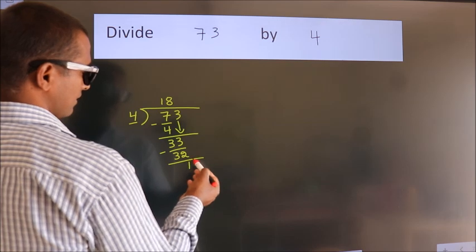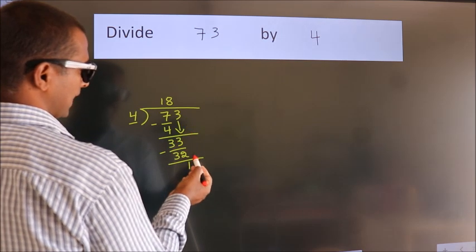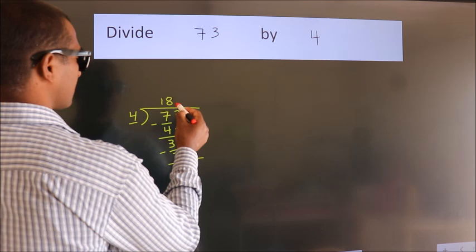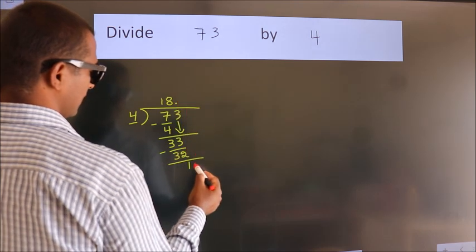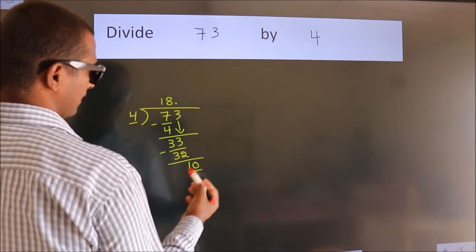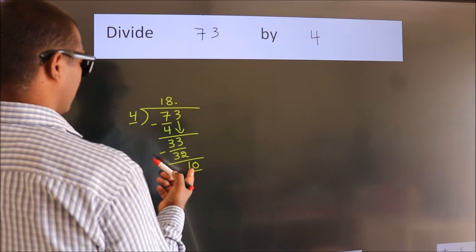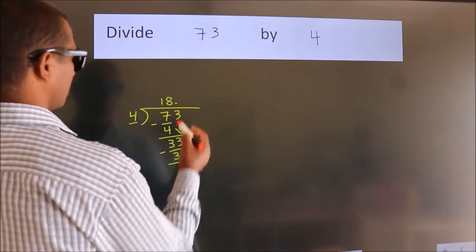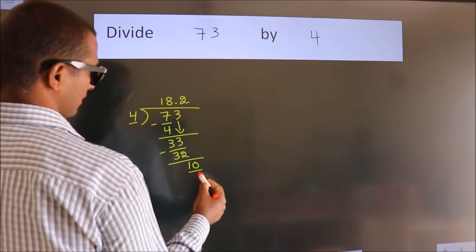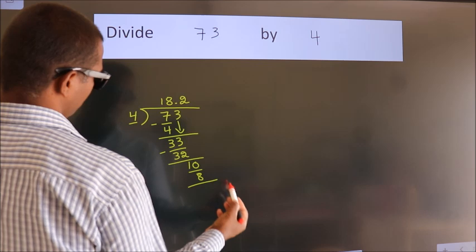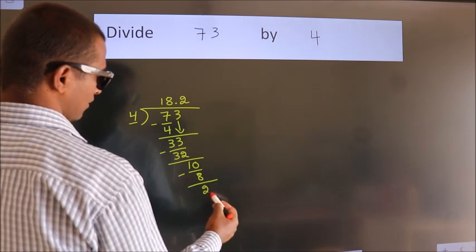After this, there are no more numbers to bring down. So what we do is put a dot and take 0, making 10. A number close to 10 in the 4 table is 4 times 2, which is 8. Now we subtract and get 2.